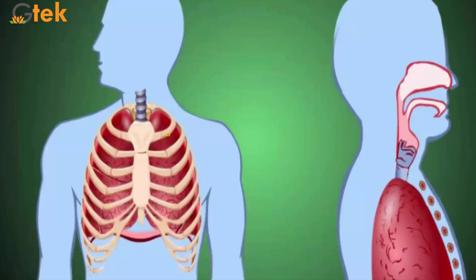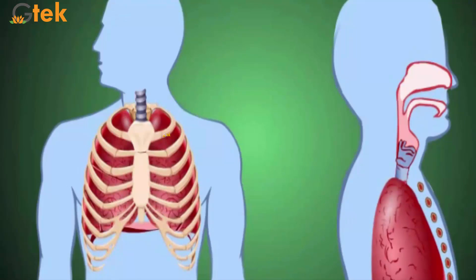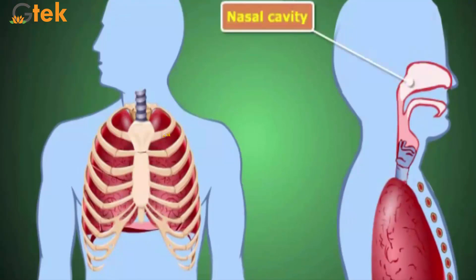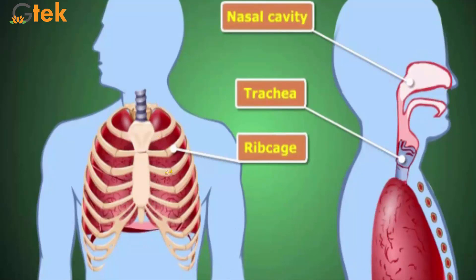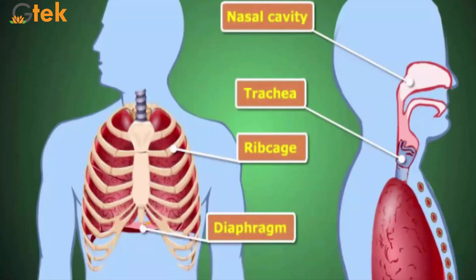Let us see about respiration. Respiration is the process that involves inhale and exhale. You can see the nasal cavity which is represented here. Through the nasal cavity, the inhale and exhale process is carried out. This portion is called the trachea, which is involved in respiration. You can see the ribcage here, and this center portion is called the diaphragm. These four parts are involved in respiration.